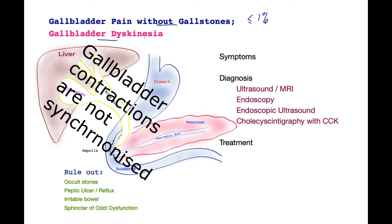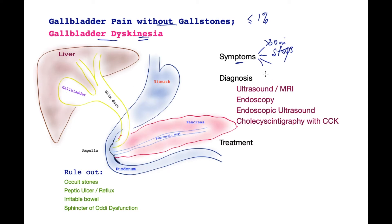Now let's look at what is different in this condition that causes pain. Typically, patients report pain that is very much like gallbladder-type pain, lasting 30 minutes or more. It is severe enough to stop them doing whatever activity they are doing, it tends to recur usually on another day of the week, and it is triggered by the kind of food they eat — especially fatty food or dairy products.